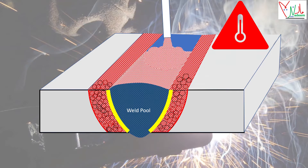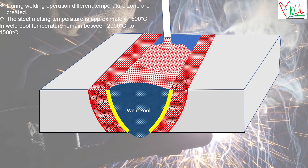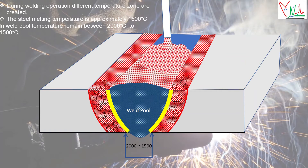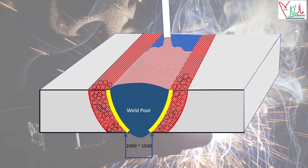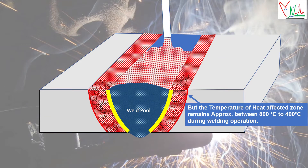During welding operations, different temperature zones are created. Steel melting temperature is approximately 1500°C. In the weld pool, temperature remains between 2000°C and 1500°C. Since the temperature is very high in the weld pool, the subsequent cooling rate will be very high, which suppresses any sensitization and subsequent formation of chromium carbides. The temperature of the heat-affected zone, however, remains approximately between 800°C and 400°C during welding.